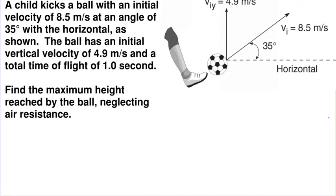A child kicks a ball with an initial velocity of 8.5 meters per second at an angle of 35 degrees with the horizontal, as shown. The ball has an initial vertical velocity of 4.9 meters per second and a total flight time of 1 second. Find the maximum height reached by the ball, neglecting air resistance. That means our ball is going to travel a path kind of like this, and what we really want to know is this vertical distance d. There's our ground.